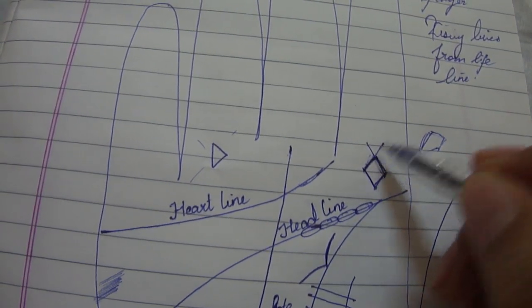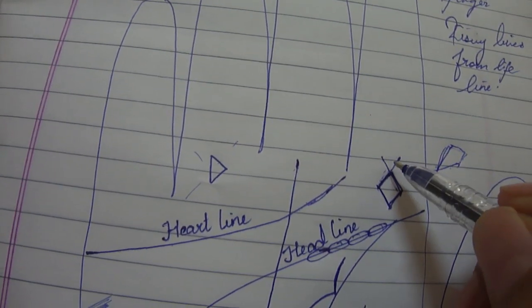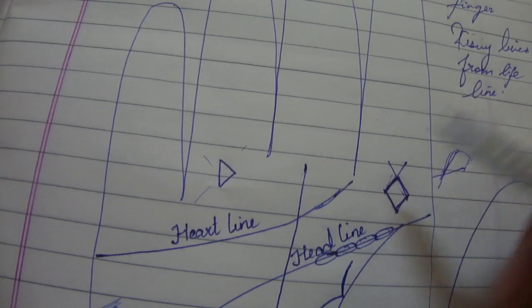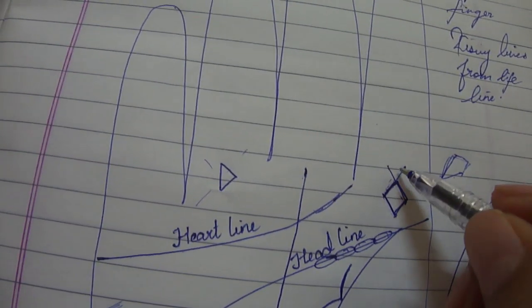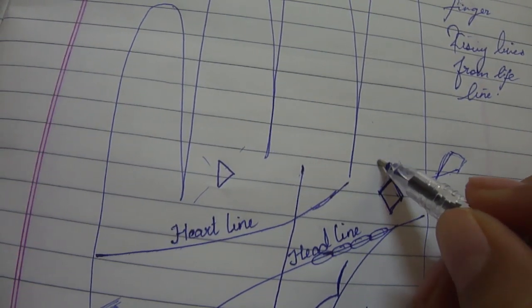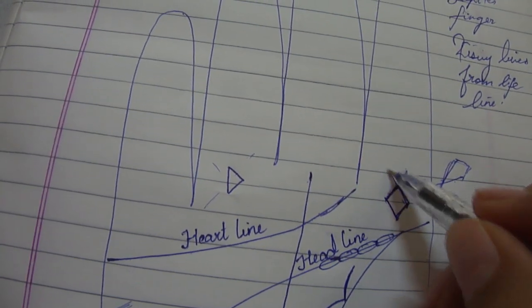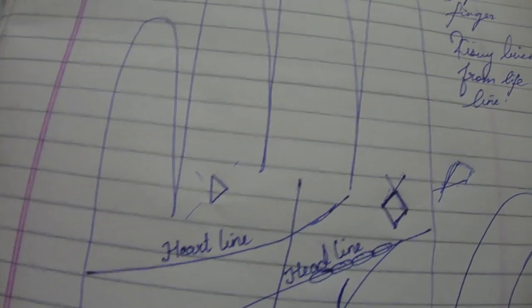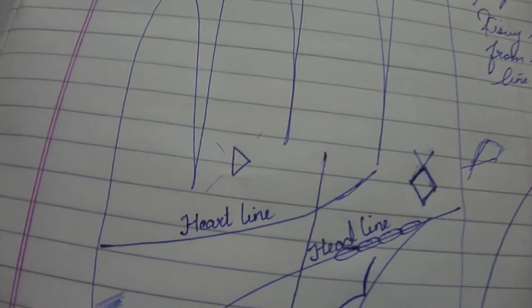The square can also mean an interest in teaching, as it is already known as the teacher square. At times it can also indicate towards a person who is good at giving instructions. This can also be interpreted as the presence of a cross, which indicates towards an interest in teaching or giving lectures.